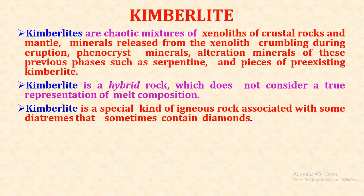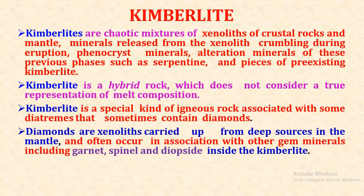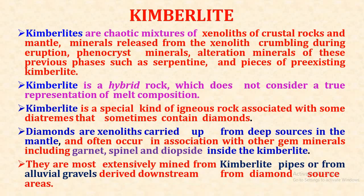Kimberlite is a special kind of igneous rock associated with some diatremes that sometimes contain diamonds. Diamonds are xenoliths carried up from deep sources in the mantle, and often occur in association with other gem minerals including garnet, spinel, and diopside inside the kimberlite. They are most extensively mined from kimberlite pipes or from alluvial gravels derived downstream from diamond source areas.